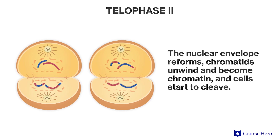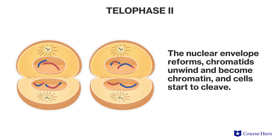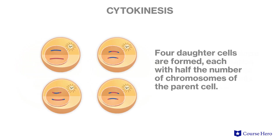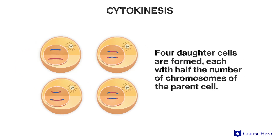During the last phase, telophase two, nuclei form and the chromosomes begin to decondense. Cytokinesis occurs, resulting in four haploid daughter cells, each genetically unique due to the crossing over that occurred in prophase one. To summarize, meiosis starts out with a diploid cell that undergoes two consecutive rounds of cell division to result in a total of four haploid genetically unique daughter cells.